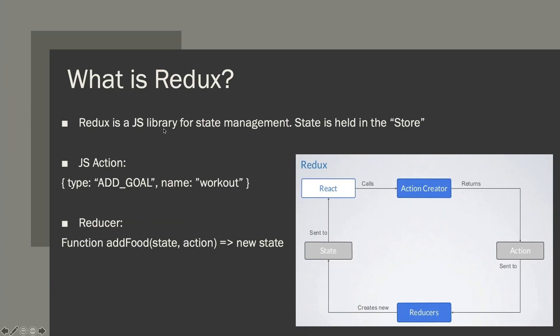So first of all, what is Redux? As I mentioned, it's just a JavaScript library for managing state. The store is basically an immutable object tree and it stores the state for different parts of our application. To give you a high-level overview of how Redux actually works, I want to show you this diagram. If we have a React application and there's some sort of event in the UI — such as a button click or a form submission — that requires a state change, here's what happens.